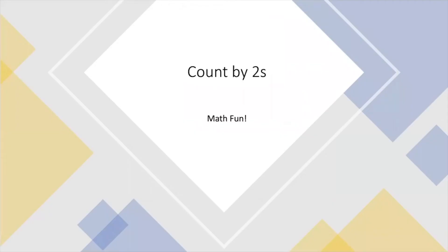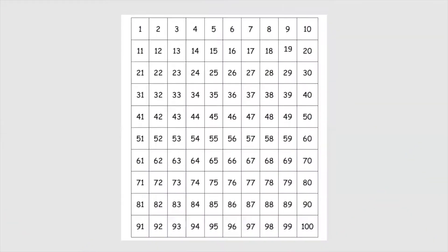Count by twos, let's do this one together. Remember, we start with the number two, then we hop two spaces. So that means we skip over one number to get to the next one we say. Start back at two and count by twos with me. Ready, go.